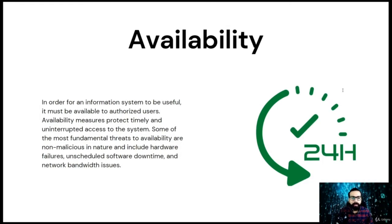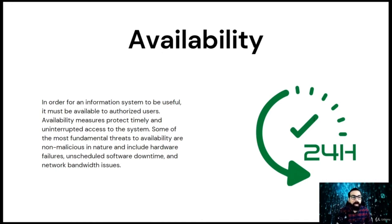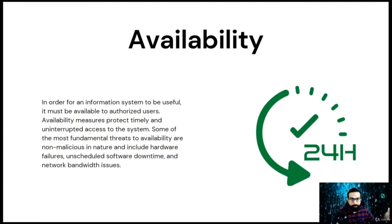The availability principle states that if an authorized individual makes a request for a resource or information, it should be available without any disruption. For example, a person wants to download his bank account statement using an online banking facility. For some reason, the bank's website is down and the person is unable to access it. In this case, availability is affected as the person is unable to make a transaction on the bank's website.